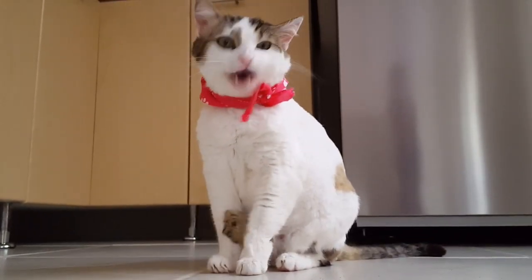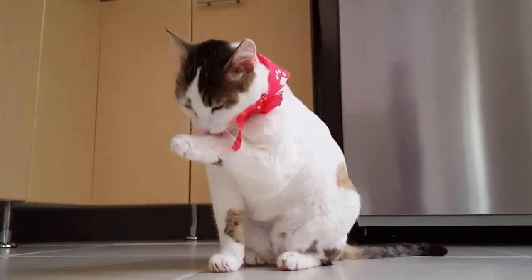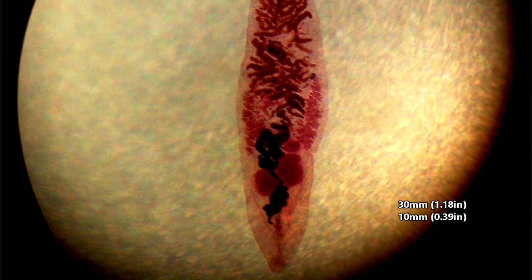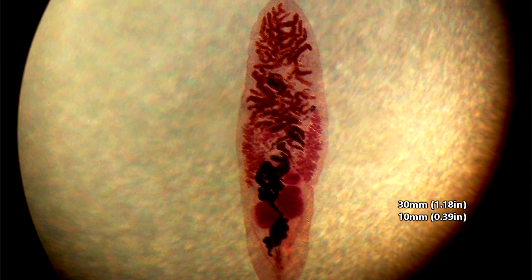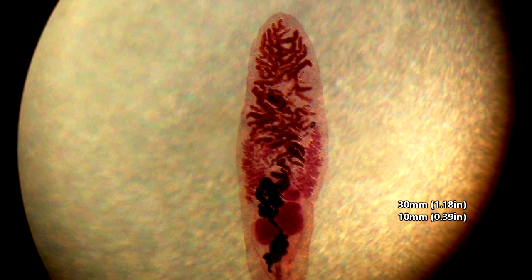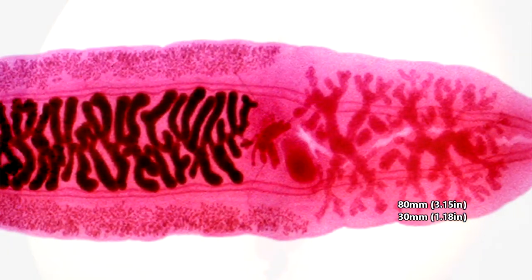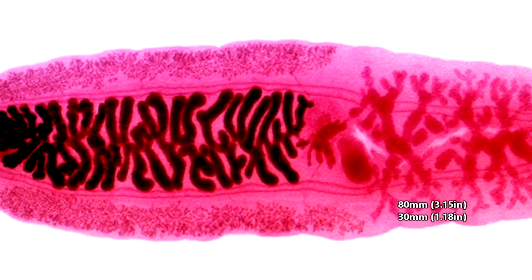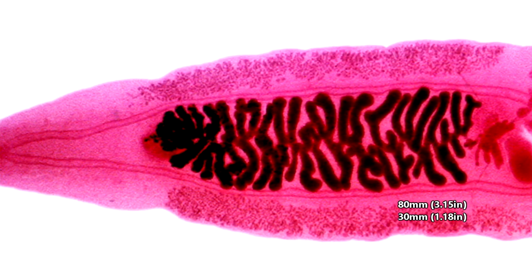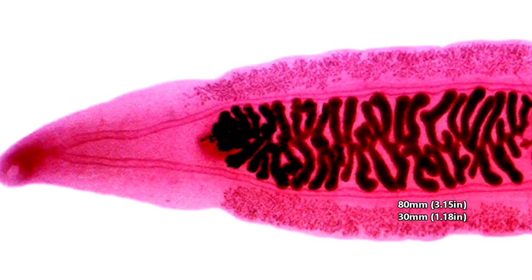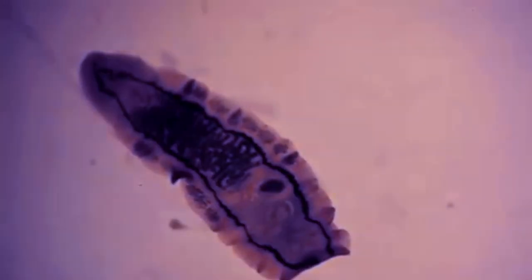Adult liver flukes are usually quite small, reaching only 30 millimeters in length and 10 millimeters in width, though the largest liver flukes can reach up to 80 millimeters long and 30 millimeters wide. As flatworms, they appear flat and are also leaf-shaped.